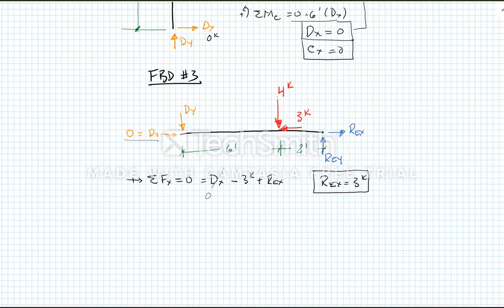Does that make sense? Sure, it makes a lot of sense. We have a horizontal force of three and the vertical member up here from free body diagram two really can't provide any resistance. So it makes sense that REX is three kips.